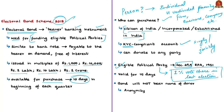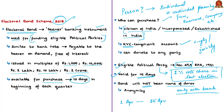These electoral bonds are valid for 15 days from the date of issue — for example, a bond issued on 1st April 2019 will be valid only up to 15th April 2019. One of the most important features of this bond is that it will not bear the name of the donor. The donor and party details will be available with the bank, but the political party might not be aware of who the donor is because the bond does not bear the name. The intention of this anonymity is to ensure that all donations made to a party are accounted in the balance sheets without exposing donor details to the public.